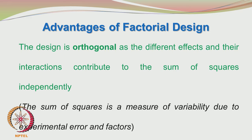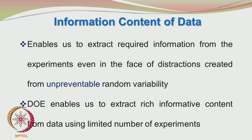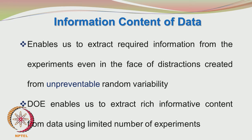The design is orthogonal, as the different effects and their interactions contribute to the sum of squares independently. Each factor contributes to the response in its own way, so variability in the response is contributed independently by the different factors. Factorial design also enables us to extract required information from experiments even in the face of distractions created by unpreventable random variations, helping us identify the main effects and their interactions. Additionally, factorial design helps us extract rich, informative content from data using a limited number of experiments.